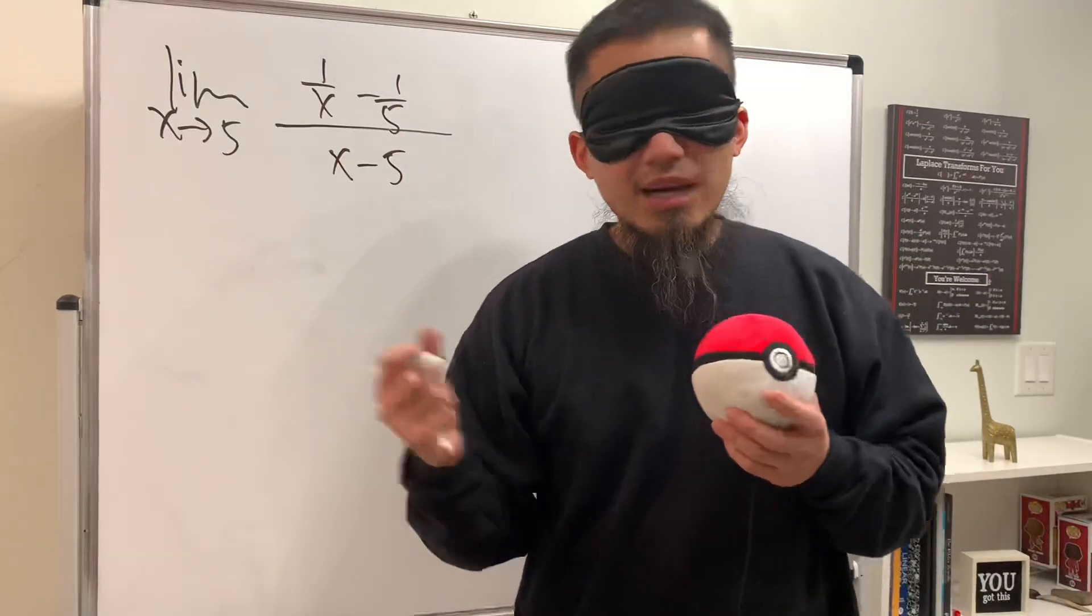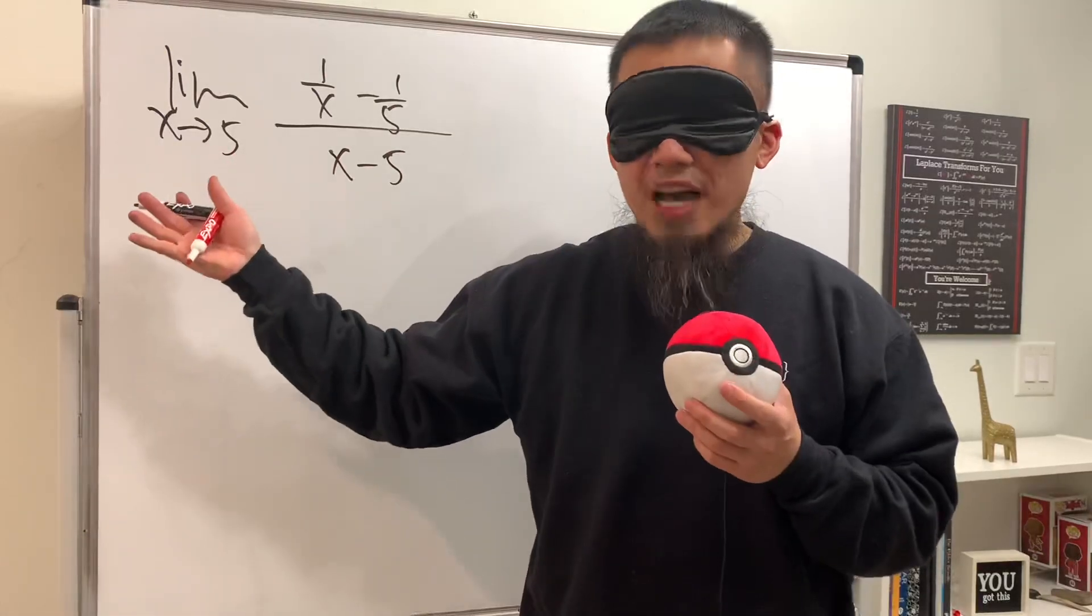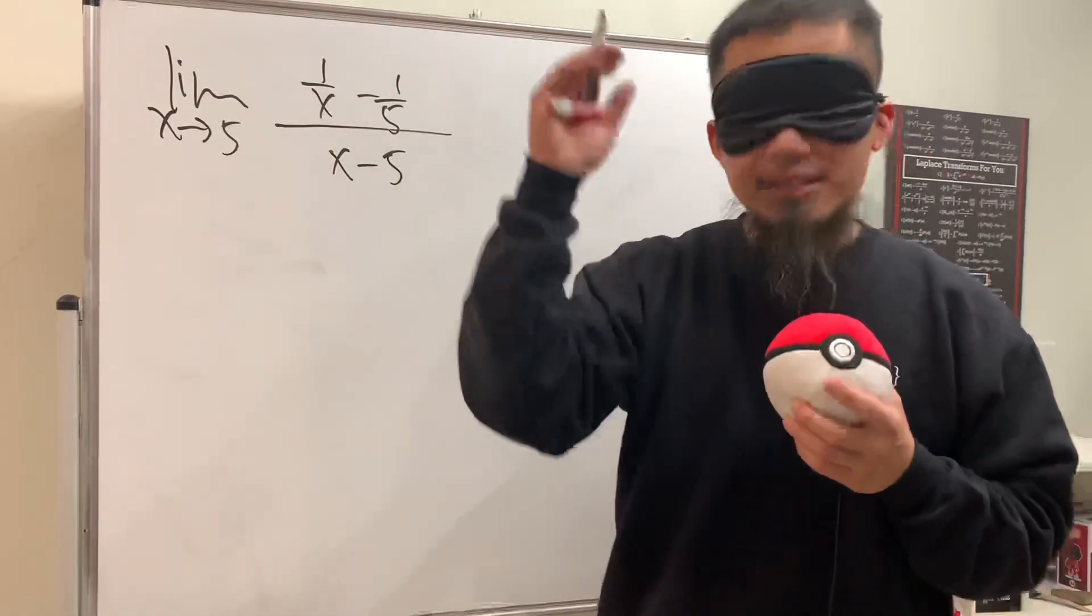This is a complex fraction situation, and if we put 5 into all the x's, we get 0 over 0.